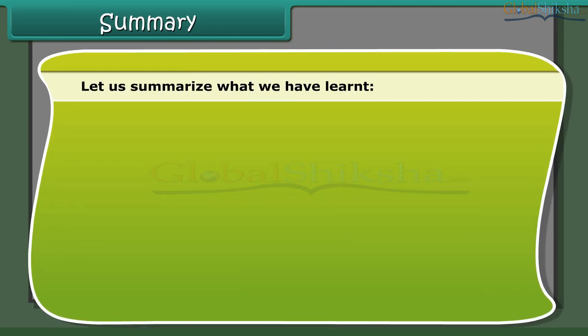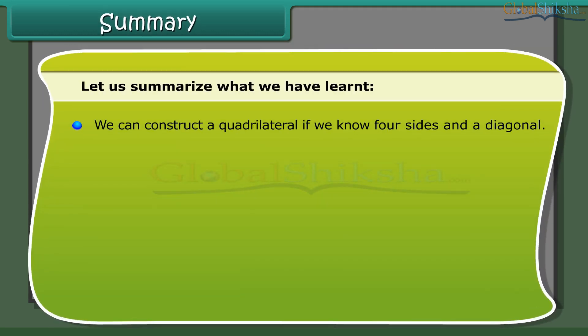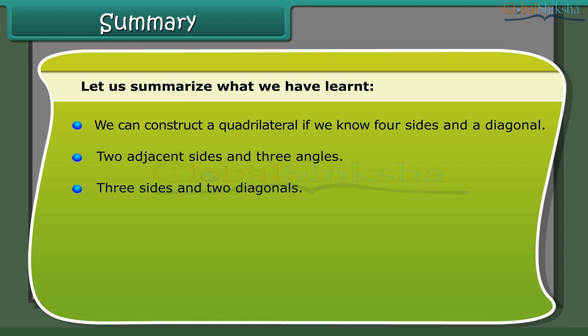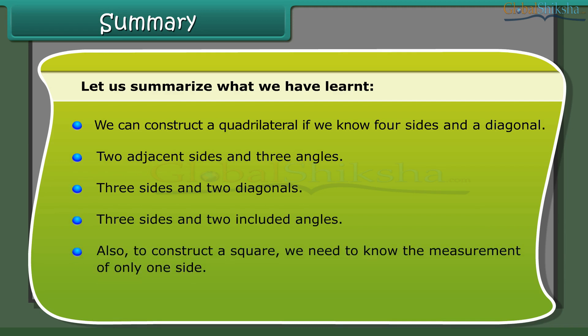In summary, we can construct a quadrilateral if we know: four sides and a diagonal; two adjacent sides and three angles; three sides and two diagonals; or three sides and two included angles. To construct a square, we need to know the measurement of only one side.